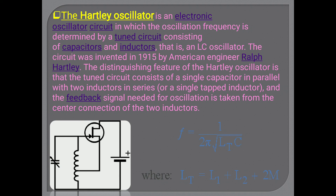The feedback signal needed for oscillation is taken from the center connection of the two inductors. The frequency of oscillation of the Hartley oscillator is given as F = 1 / (2π√(L_T · C)), where C is the capacitance of the capacitor connected across the oscillator, and L_T = L1 + L2 + 2M (the sum of both inductors plus twice the mutual inductance M). Therefore, the frequency of oscillation is F = 1 / (2π√(L_T · C)).